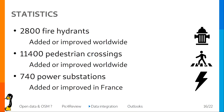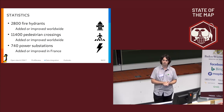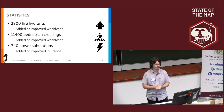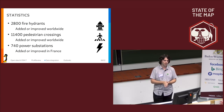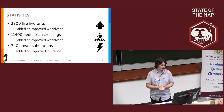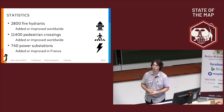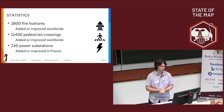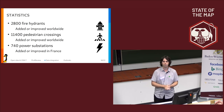Looking at the statistics, the project has been around for more than one year. There are around 600 different users who have used it, and they've added hundreds of thousands of objects. For example, 2,800 fire hydrants have been added worldwide, more than 11,000 pedestrian crossings have been improved in their description — mostly indicating wheelchair accessibility — and around 7,000 power substations in France. So it's not bad at all.